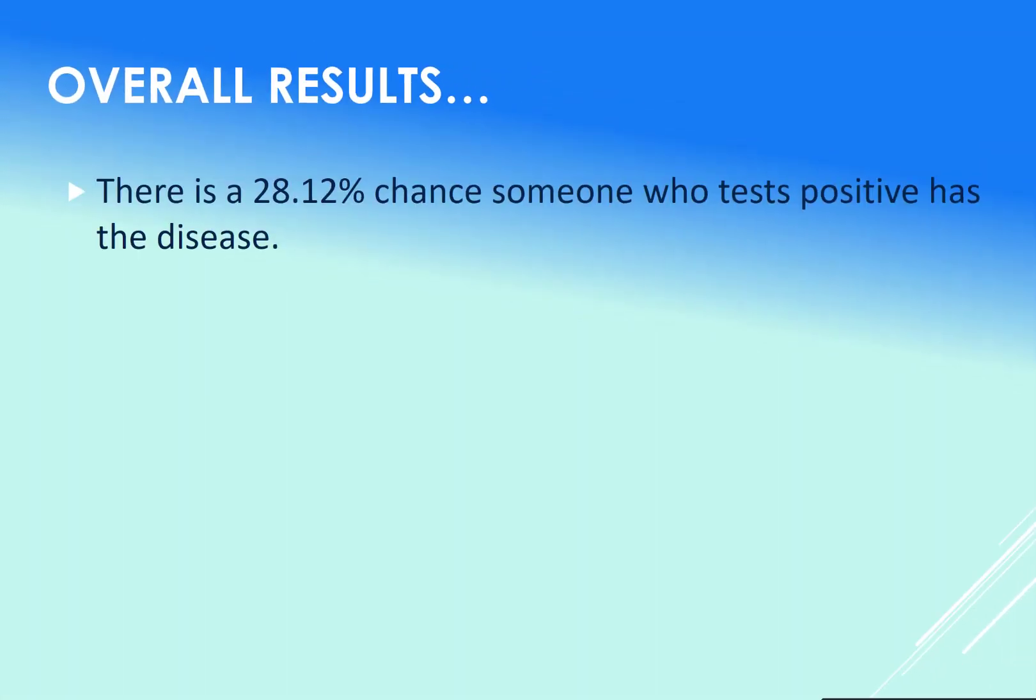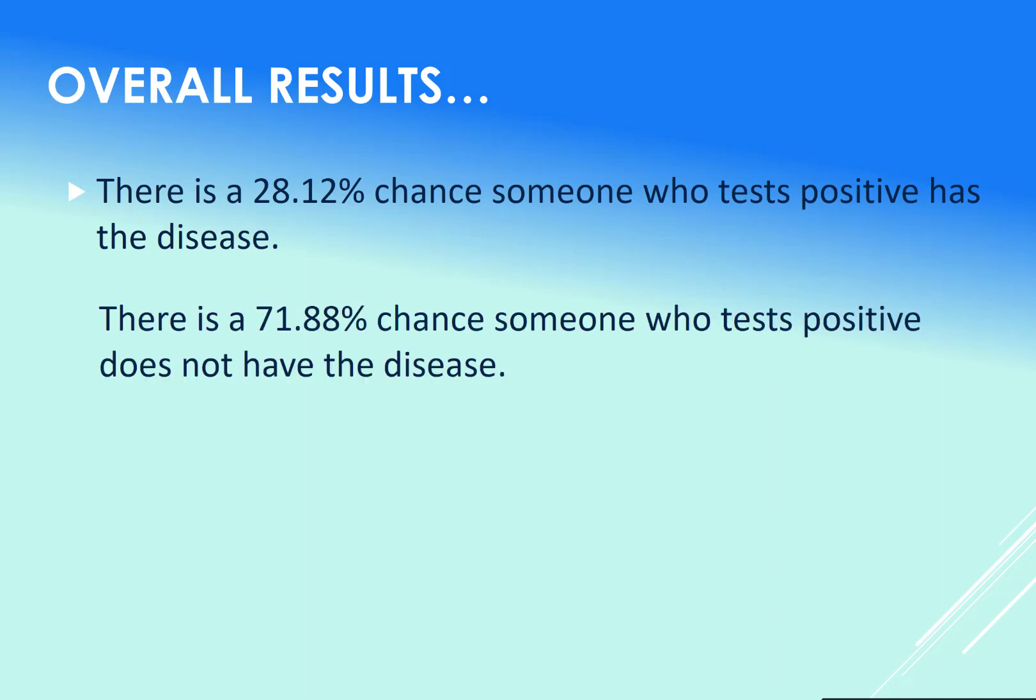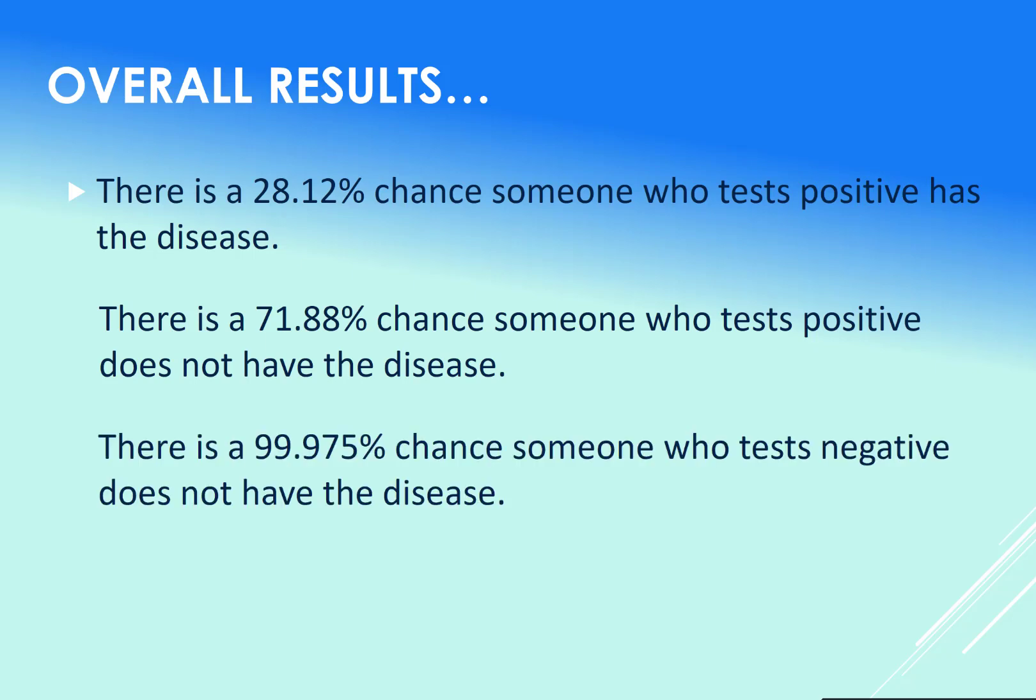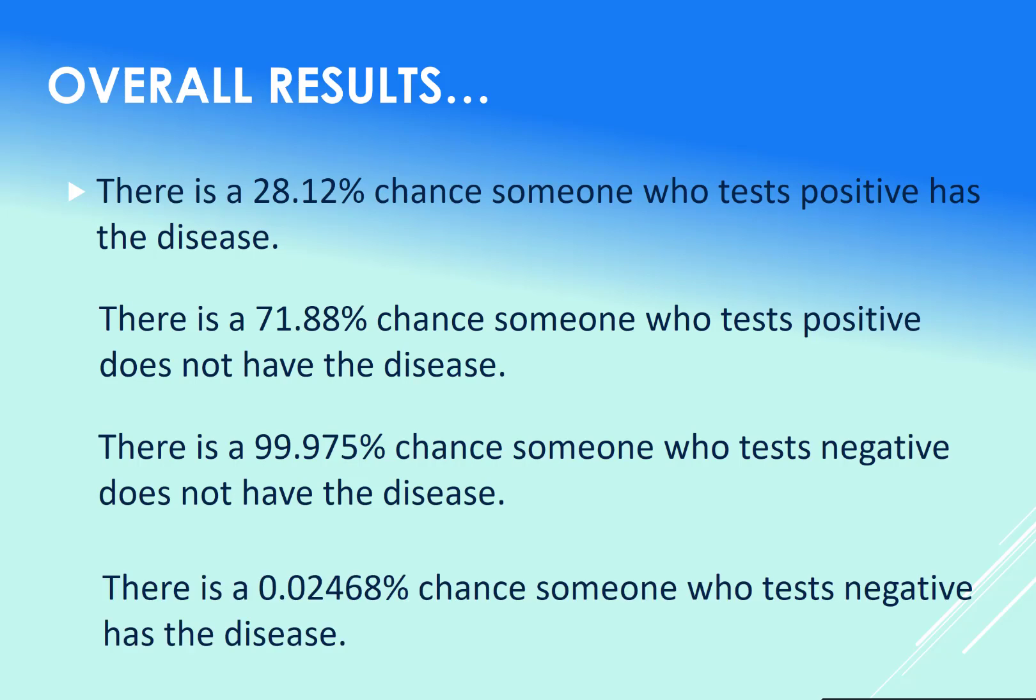Okay, so overall results. There is a 28% chance someone who tests positive actually has the disease. A 71.88% chance somebody who tests positive does not have the disease. That's our false positive. 99.9% chance somebody who tests negative does not have the disease. And a 0.02% chance someone who tests negative has the disease. So the negative is actually much more correct than the positive for this test.